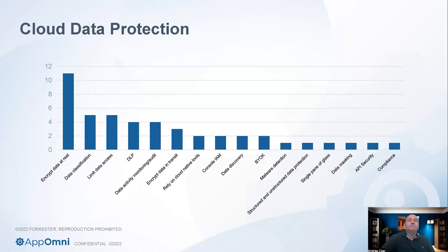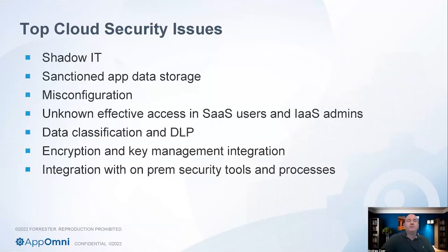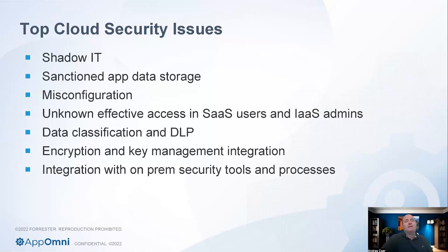Some of the cloud security problems we see include shadow IT — if you don't understand where your data goes, you cannot protect it. Sanctioned application data storage — things like OneDrive, Google Drive, SharePoint — are platforms where data is sitting, and though they're sanctioned, a lot of times you have no idea what's in there and how it is being shared. Misconfiguration is definitely a huge problem, partially thanks to SaaS and infrastructure service providers who, in their quest to provide a usable service, cut corners around mandating strong security features.